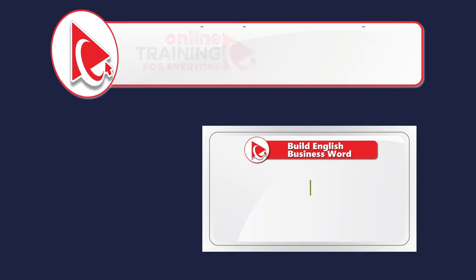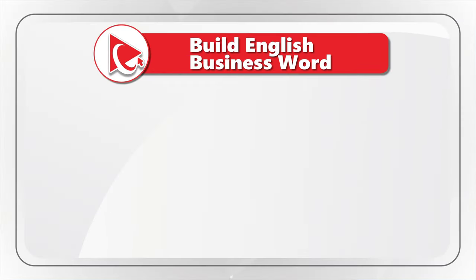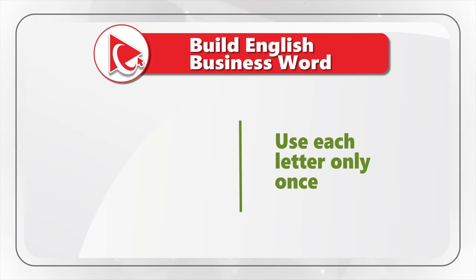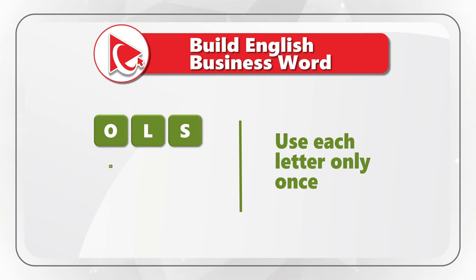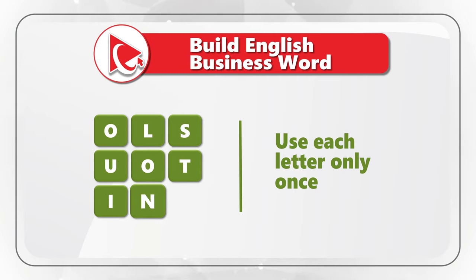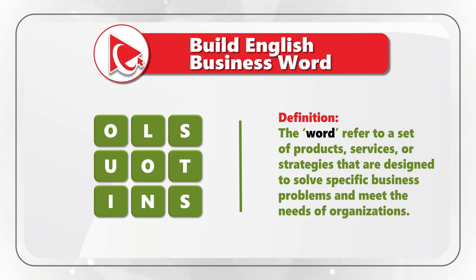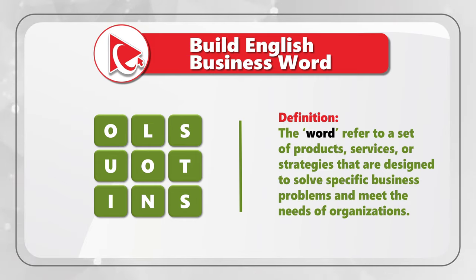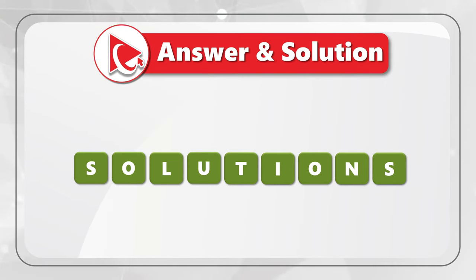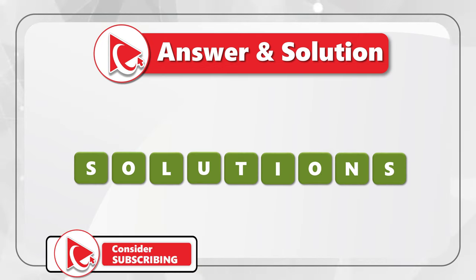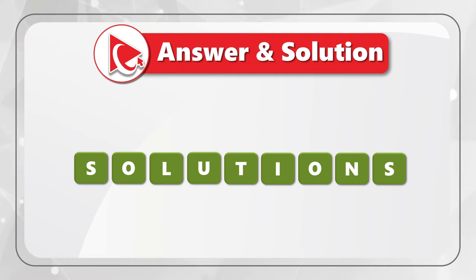A very interesting question for you to try your skills. You're presented with nine letters of the English alphabet, and you need to build an English business word. The letters are O-L-S-U-O-T-I-N-S. The word refers to a set of products, services, and strategies that are designed to solve specific business problems and meet the needs of organizations. The answer is 'solutions.' Business solutions are typically developed by vendors or service providers who have expertise in a particular industry or functional area. The word is spelled S-O-L-U-T-I-O-N-S.